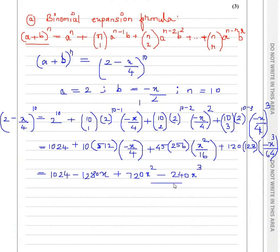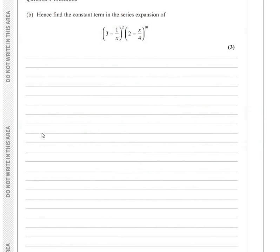This gives you the final answer for part A. Let us look at part B of the question now. We need to find the constant term in the series expansion of 3 minus 1 over x, the whole squared, times 2 minus x over 4, raised to the power of 10.